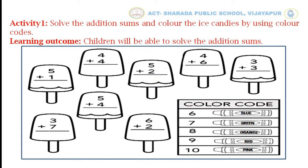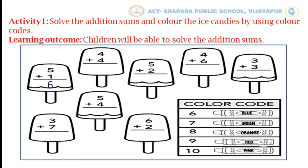Children, here on the images of ice candies there are addition problems. Now we are going to solve them. We will solve the first one. The addition fact is 5 plus 1. 5 plus 1 is 6. Now we will write number 6 here. We got 6 as the answer. The color code for 6 is blue, so we color this candy using a blue color pencil. In the same way, solve the addition sums of each candy and color them as per the color code given in the box.